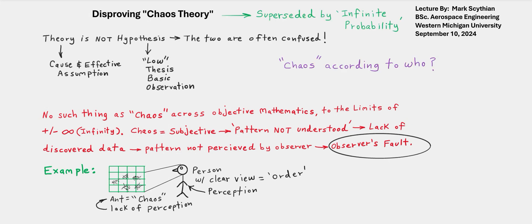We have to first start out and differentiate the difference between a theory and a hypothesis. The two are often confused as the same when in fact a theory is a cause and effect assumption, whereas the hypothesis is a low thesis, basic observation, or an evidence-based observation with the potential to disprove a competing evidence-based observation.